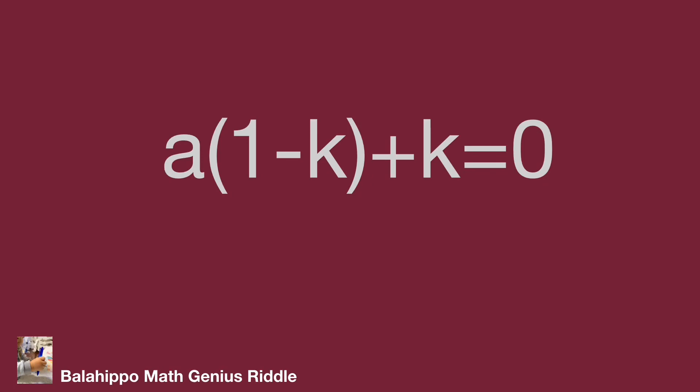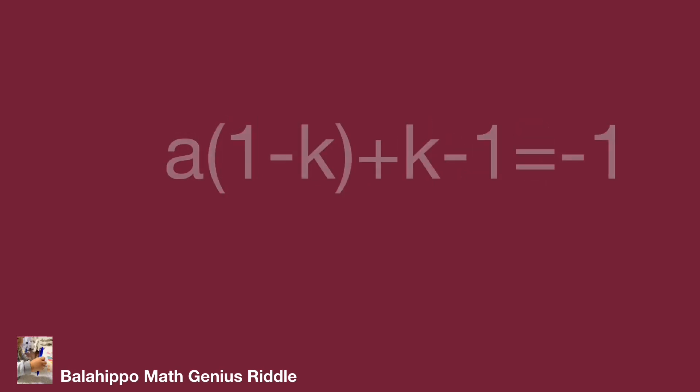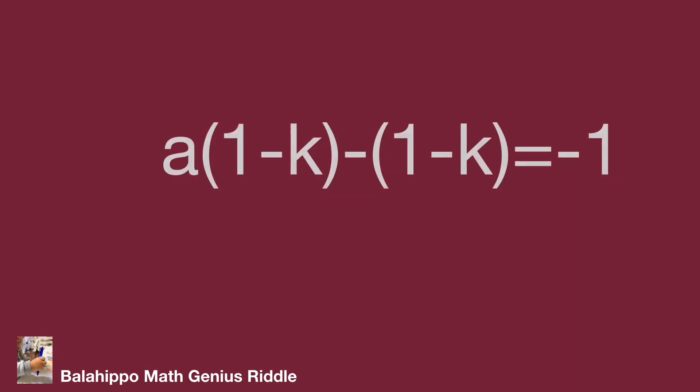There is 1 minus K in the first item. So let's generate another 1 minus K factor in this equation. After that, adjust as A times (1 minus K) plus K plus K minus 1 equals minus 1, which equals A times (1 minus K) plus (1 minus K) equals minus 1. Factorize as (A minus 1) multiplied by (1 minus K) equals minus 1.